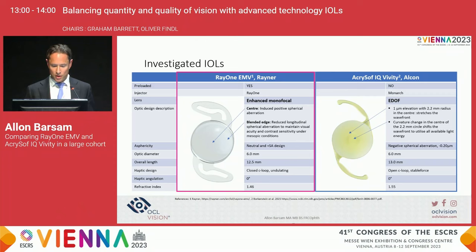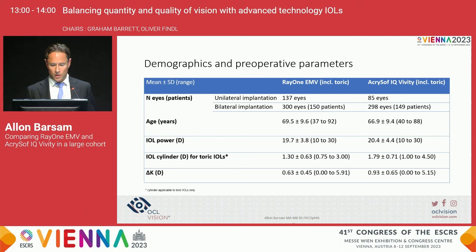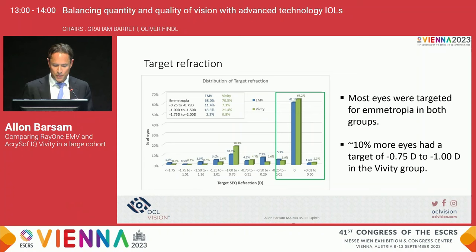This was a retrospective study with six months of follow-up comparing the RayOne EMV with the Acrisoft Vivity lens. We looked at objective assessments — visual acuity and refraction — and subjective outcomes using the RayPro questionnaires for patient satisfaction. 820 eyes of 517 patients were included. About 300 patients in each group had bilateral implantation with the minority having unilateral implantation. The group includes toric and non-toric versions of both lenses. Most eyes were targeted for emmetropia in the dominant eye.